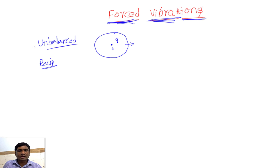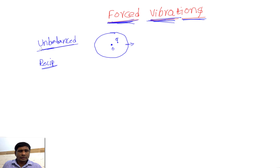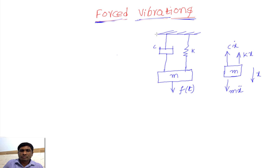These types of external exciting forces are induced in real mechanical systems, so we need to know how to formulate the equation of motion in that case, how to find the solution for that equation of motion, and ultimately the amplitude of vibration. Consider a simple spring-mass system with a damper and an externally applied force.